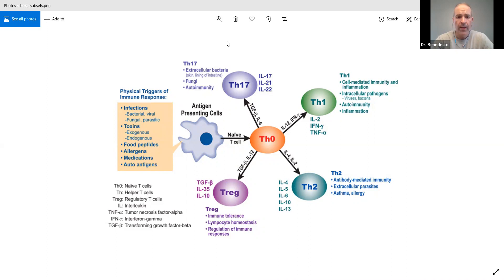Here's what happens. If you look on the left side over here, you see physical triggers of an immune response. So these are things that you can be exposed to that we call a trigger. Bacteria, viruses, fungus, toxins, food peptides which are proteins, allergens, medications, you name it.